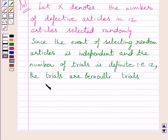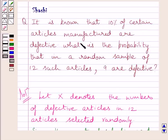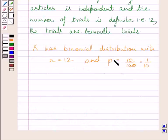Clearly, X has binomial distribution with n equals 12 and p equals 10 upon 100. We know 10% of certain articles manufactured are defective, so the probability of getting a defective article is 10 upon 100, which simplifies to p equals 1 upon 10.